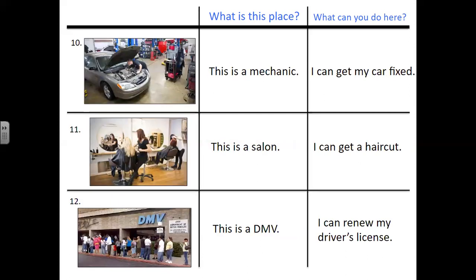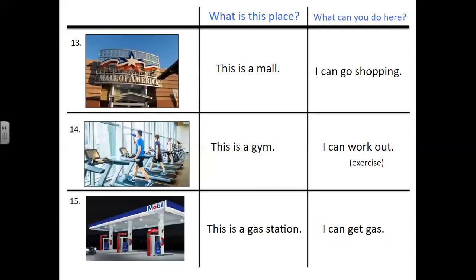Number ten. What is this place? This is a mechanic. What can you do here? I can get my car fixed. Number eleven. What is this place? This is a salon. What can you do here? I can get a haircut. Number twelve. What is this place? This is a DMV. What can you do here? I can renew my driver's license.